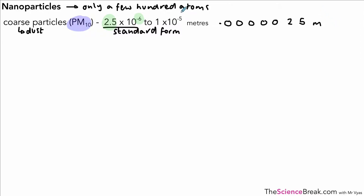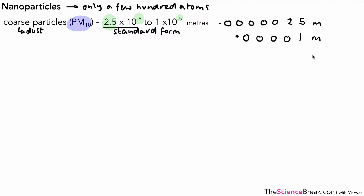Let's do the same with 1 × 10⁻⁵ — this is good practice. Take the 1, and since it's 10⁻⁵, move the decimal point five places to the left, putting in zeros, giving us 0.00001 meters. Standard form is very useful to represent very large or very small numbers, and that's how we can show what they actually mean.